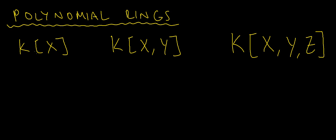So first of all, k with the square brackets x inside means the set of all, or rather the ring, containing all the polynomials whose coefficients are in k, the field k, and in a single variable x.